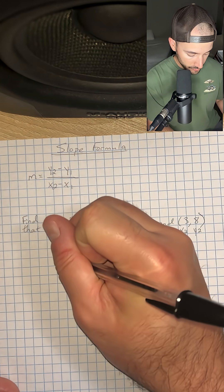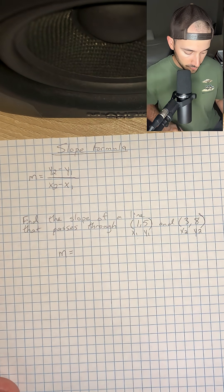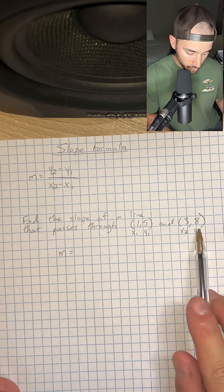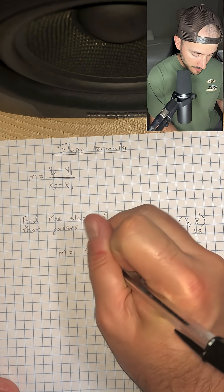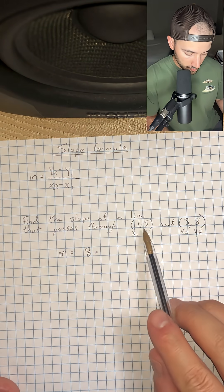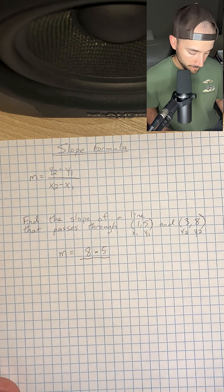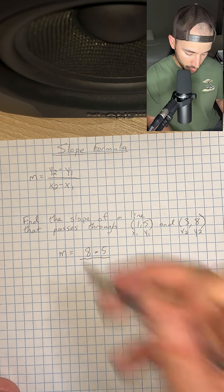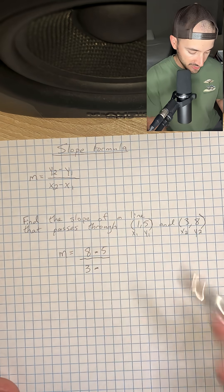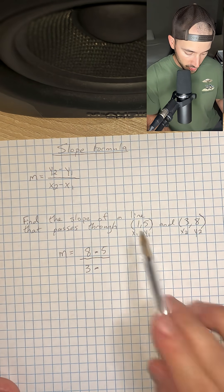So our slope or M is going to be equal to y2, which is 8, minus y1, which is 5, over x2, which is 3, minus x1, which is 1.